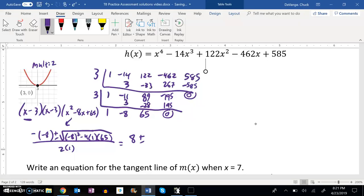So I've got 8 plus or minus over 2, square root of 64, and let's see, 4 times 65 is 260. So 64 minus 260.